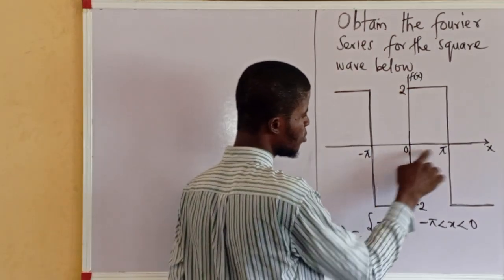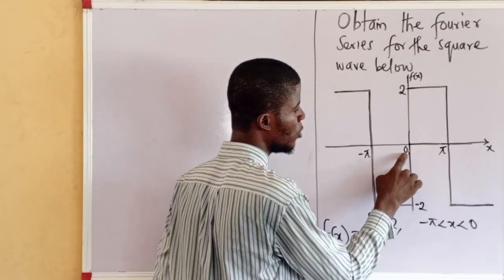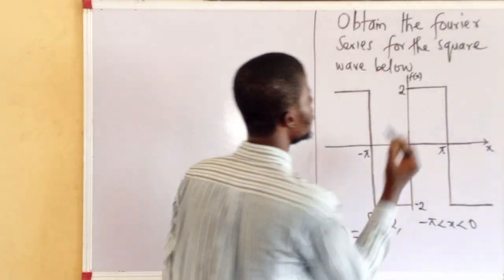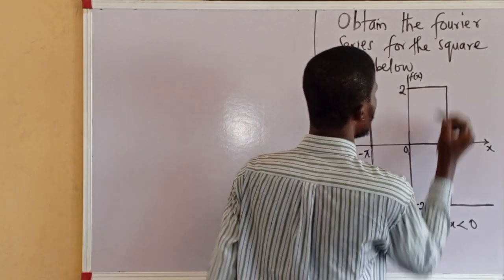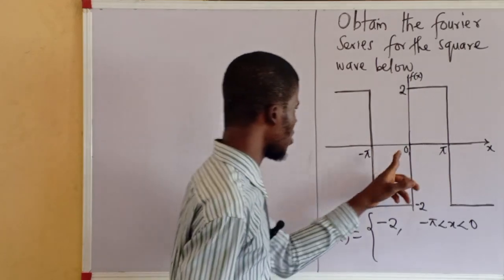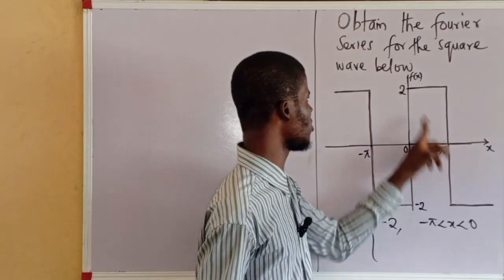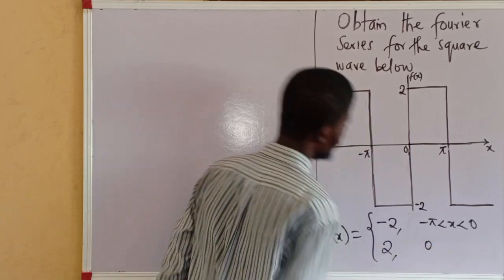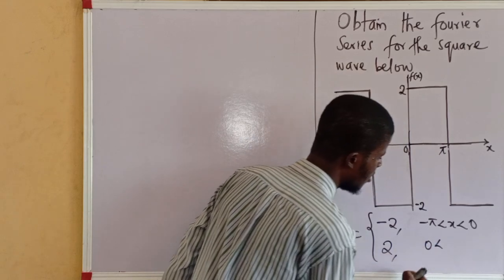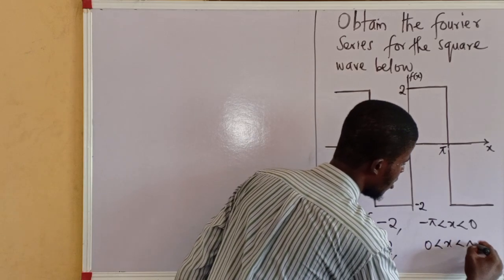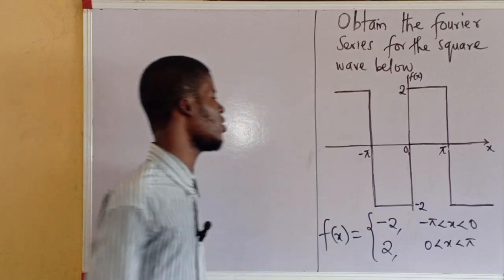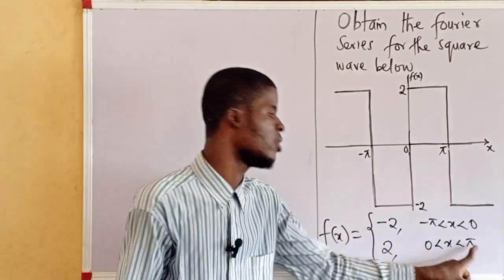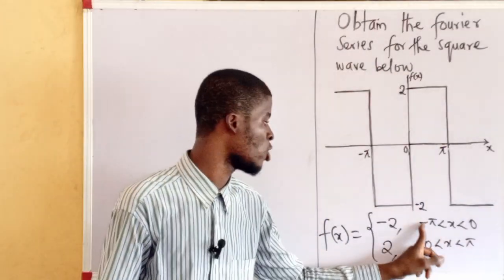Also, from 0 to pi — between x equals 0 and x equals pi — what is f of x? We can see it is 2. So between 0 and pi, f of x is equal to 2, that is 0 less than x less than pi. The interval is from minus pi to pi.